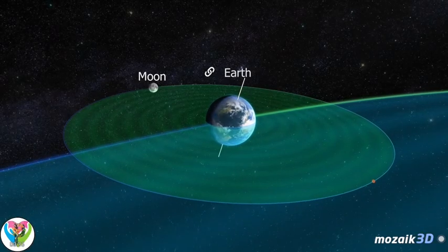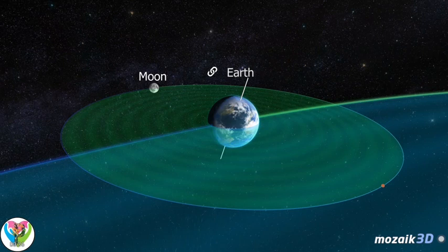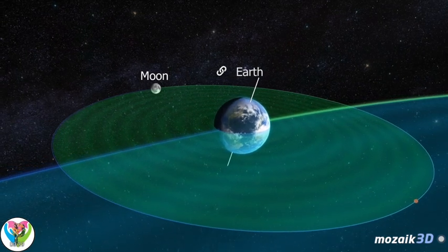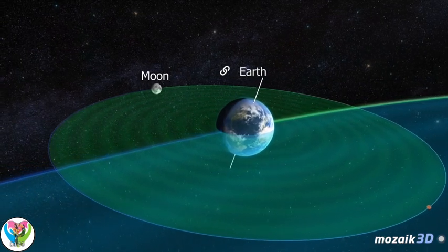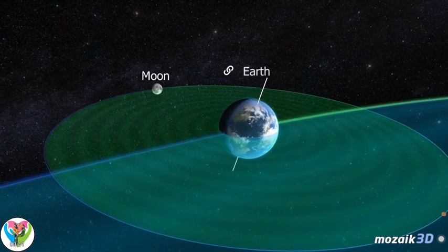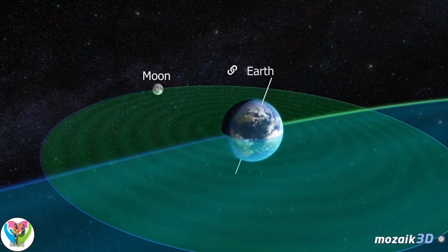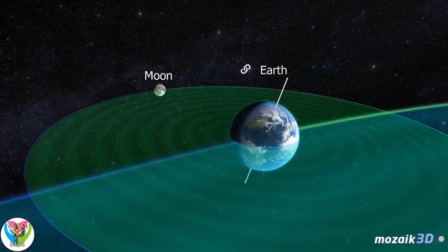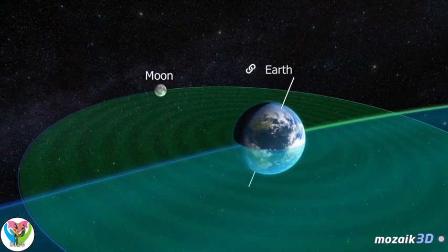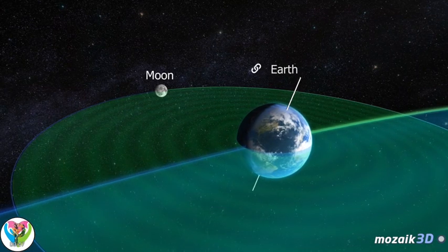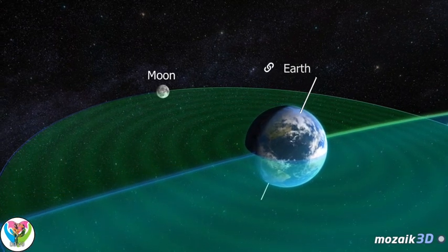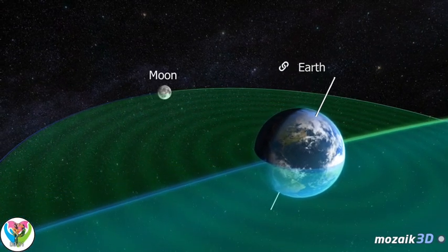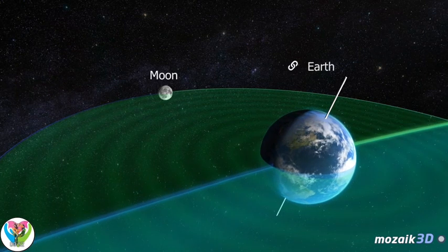The Earth's only natural satellite is the Moon, which formed about 4.53 billion years ago. The Moon was formed not long after the formation of the planets, as a result of a collision between the young Earth and another ancient planet of about the size of Mars.